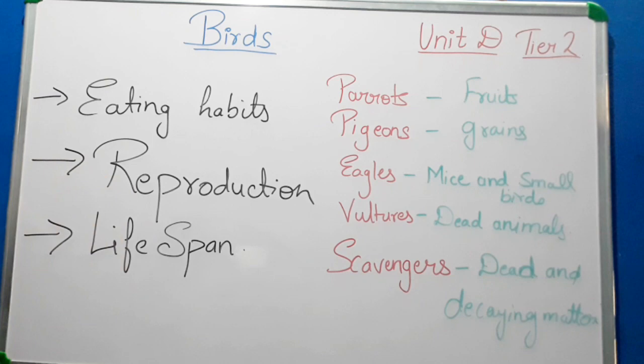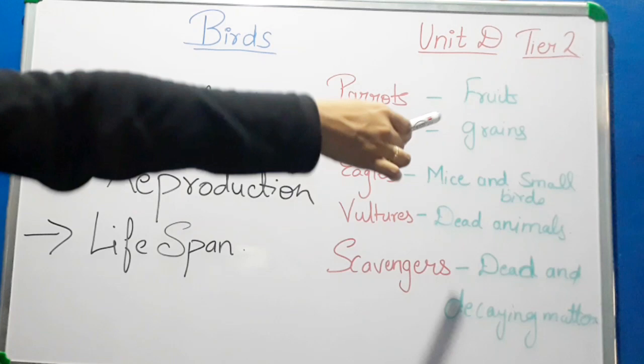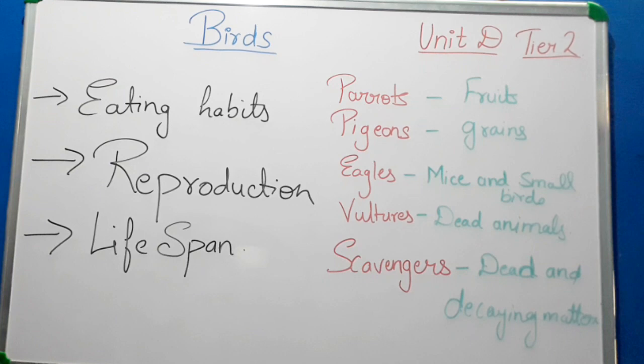Now let's see the eating habits of birds. Eating habits of different birds are different. Parrots eat fruits, pigeons eat grains, eagles eat mice and small birds, vultures eat dead animals and dead birds, and scavengers feed on dead and decaying matter.